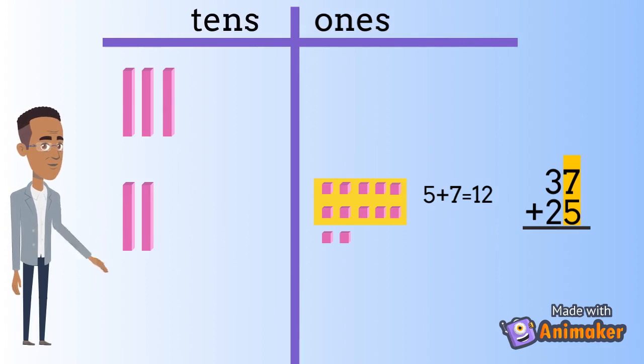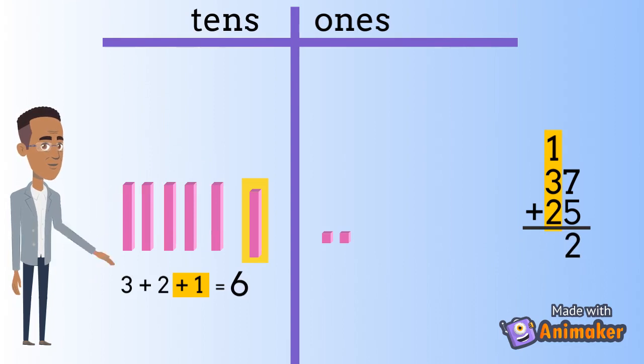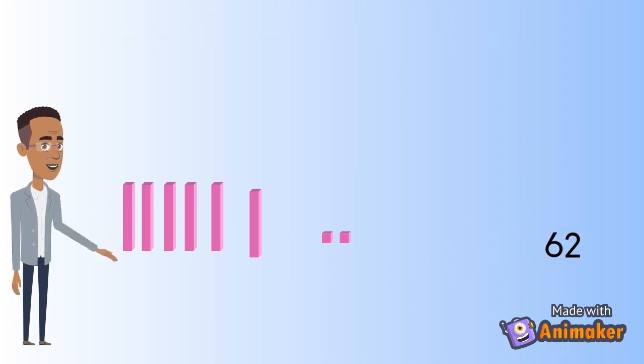Now, we have 2 ones left, and we can add the rest of our tens. 3 plus 2 plus the 10 that we carried over makes 6. We have 6 tens and 2 ones all together. 6 tens and 2 ones makes 62.